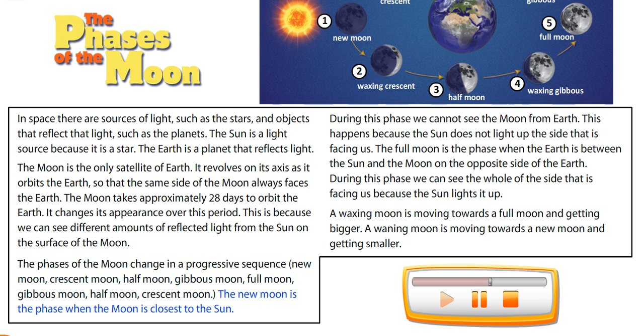The New Moon is the phase when the Moon is closest to the Sun. During this phase, we cannot see the Moon from Earth. This happens because the Sun does not light up the side that is facing us. The Full Moon is the phase when the Earth is between the Sun and the Moon on the opposite side of the Earth. During this phase, we can see the whole of the side that is facing us because the Sun lights it up.